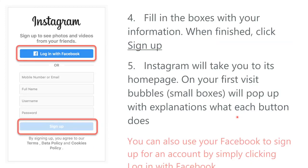To sign up, you're going to fill in the boxes with the information. When you've successfully done it, you're just going to tap the sign up button at the bottom of the screen, or you can log in with Facebook. Instagram will now take you to the homepage of the app or the website, and it looks similar on both devices, but there's more functionality in the app.